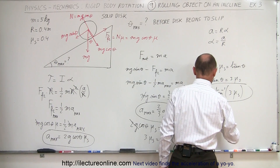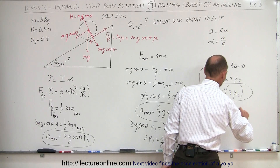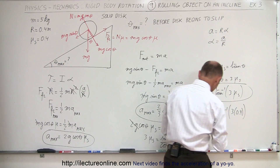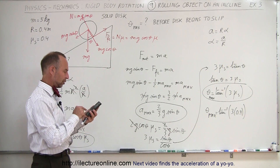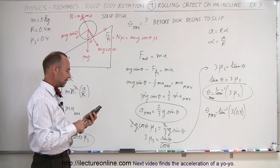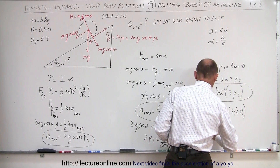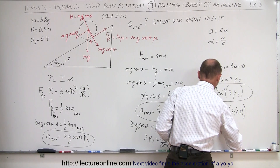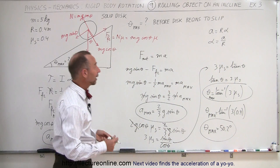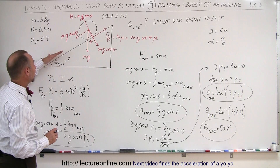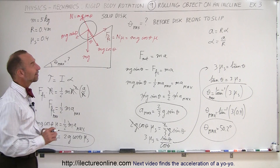With our coefficient of friction being 0.4, theta_max equals the arctangent of three times 0.4, which is arctangent of 1.2. Taking the inverse tangent of 1.2 gives us 50.2 degrees. So the maximum angle theta_max is 50.2 degrees. The greater the coefficient of friction, the steeper the incline can be before the wheel begins to slip rather than roll.